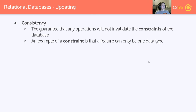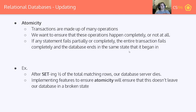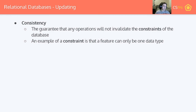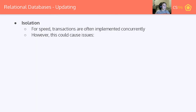Consistency is the guarantee that operations won't invalidate the constraints of a database. This doesn't mean operations do what you think they'll do — they'll do whatever they're written to do. But consistency ensures that even if you write an operation in a way you didn't mean to, it won't break things. For example, a column can only be one data type, so if you attempt to update an integer column with a string value, it will not run — and it will atomically not run, so nothing will be changed.